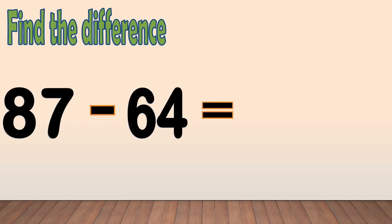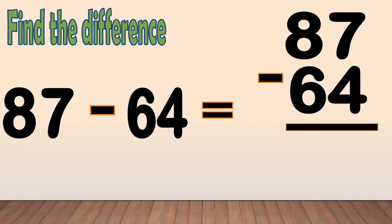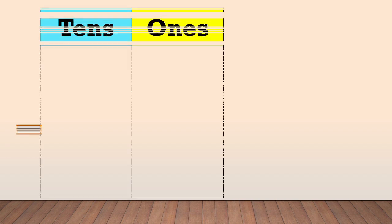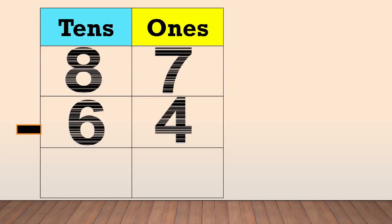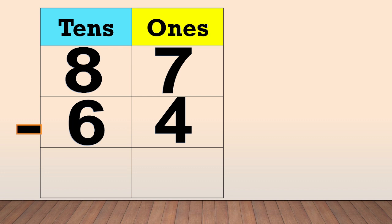Another example: 87 minus 64. First, arrange the numbers in columns like this. Place the digit of the number in a column based on its place value. 87 minus 64.